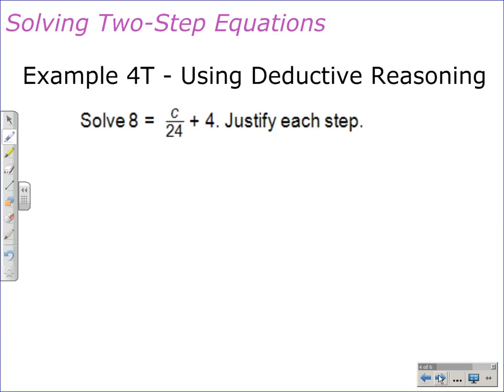Example 4T, moving into the second objective, using deductive reasoning. This is starting to build for geometry where we need to solve the equation 8 is equal to C divided by 24 plus 4 and justify each step. The first thing to do is to write down the original equation. 8 is equal to C divided by 24 plus 4. And as far as a reason for that, that would be the given.